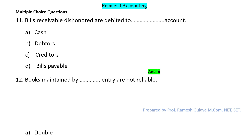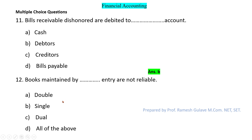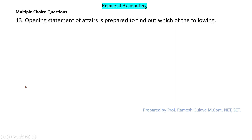The next question says: books maintained by blank entry are not reliable. Books maintained by single entry are not reliable because it is an incomplete record. So option B is the right answer.